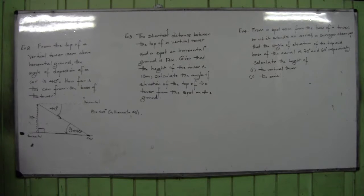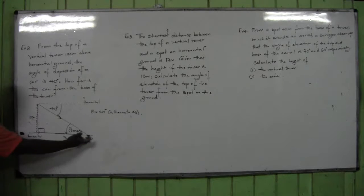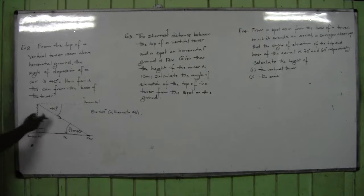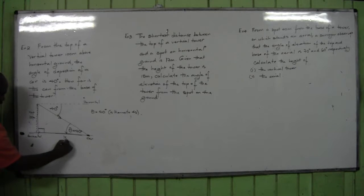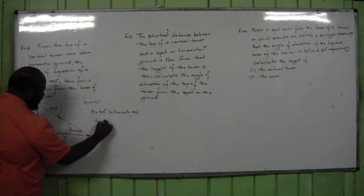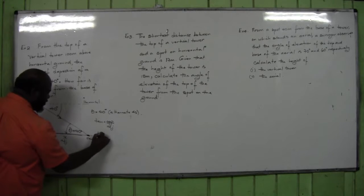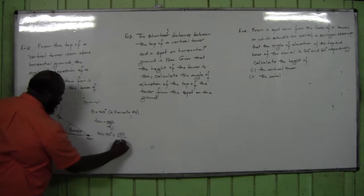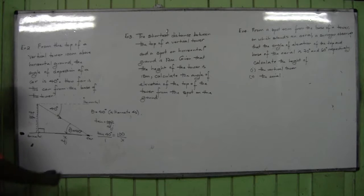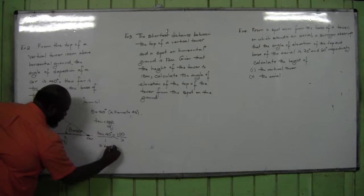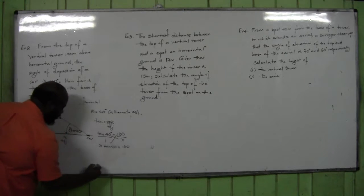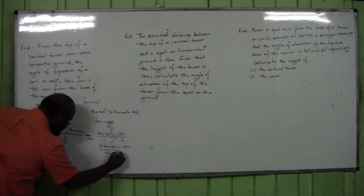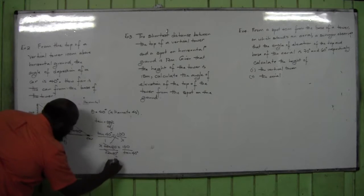What do they ask us to find? How far is the car from the base of the tower — this distance here. I'm going to call it x. To the 40-degree angle, this side is opposite and this side is adjacent. The ratio that includes opposite and adjacent is tan. So tan(40°) = opposite over adjacent = 100 over x. Cross-multiplying: x times tan(40°) = 100.